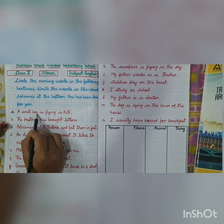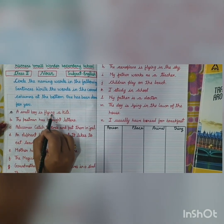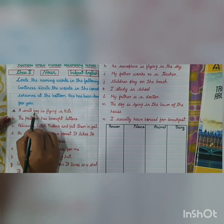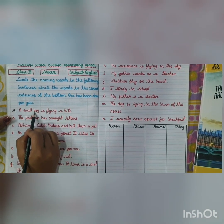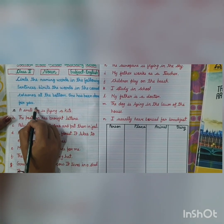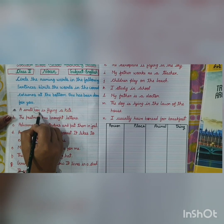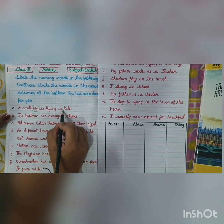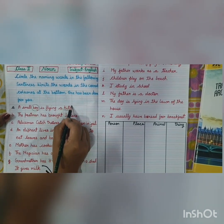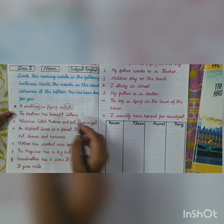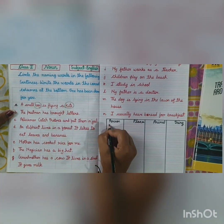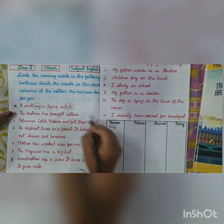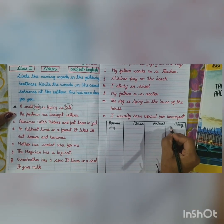A small boy is flying a kite. Boy is a naming word — a person. Kite is a thing. So we write boy in the persons column and kite in the things column.